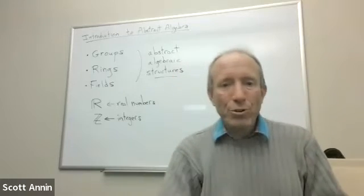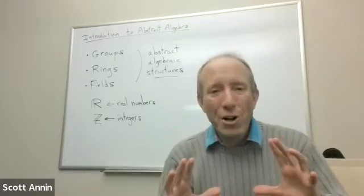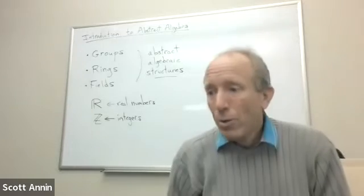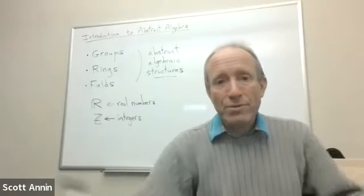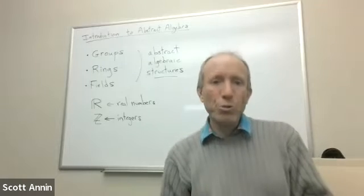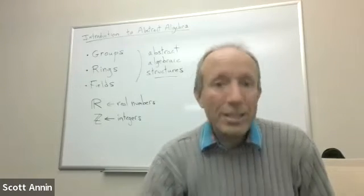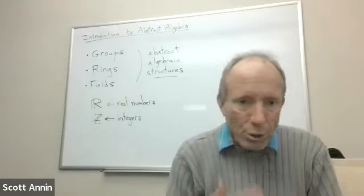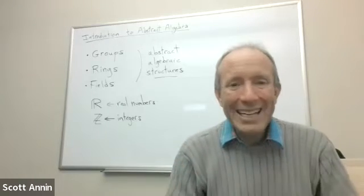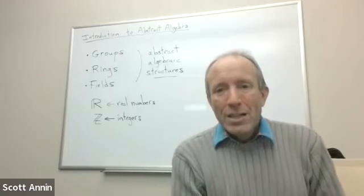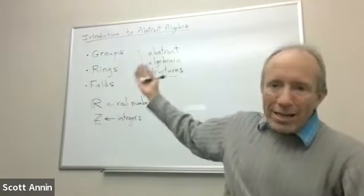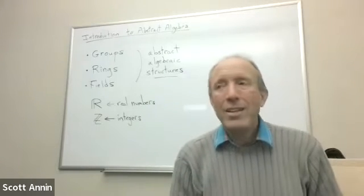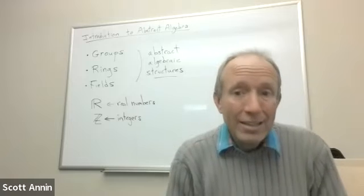Group theory, one example of a group is to take the collection of all possible rotations and reflections of some three-dimensional object. Well, this has applications in physics and chemistry, the sciences. It's a very important example of a group. Group theory is also really important in computer science. There are many examples of structures where efficiency of computer programs can be understood through the lens of abstract algebra.